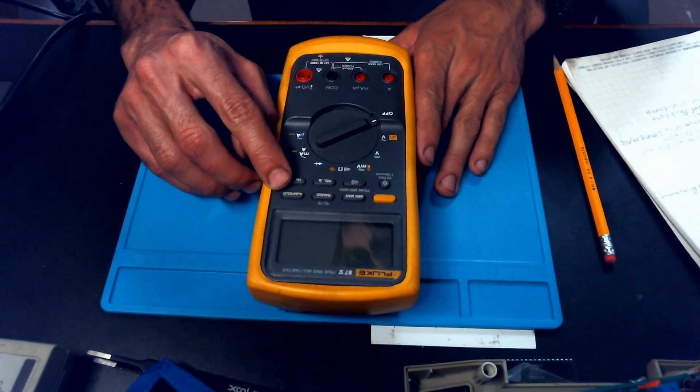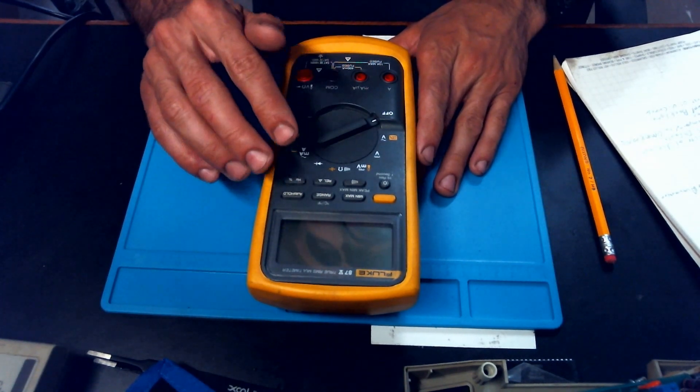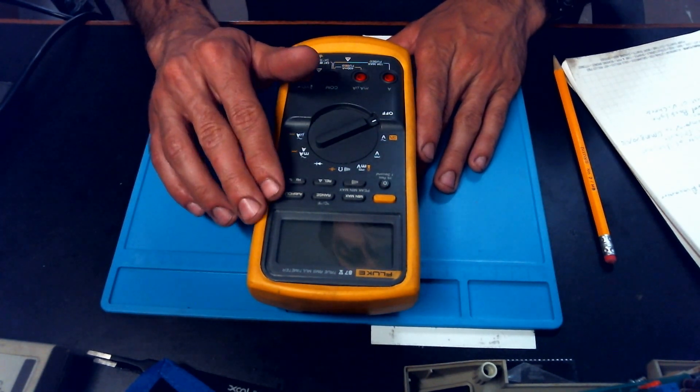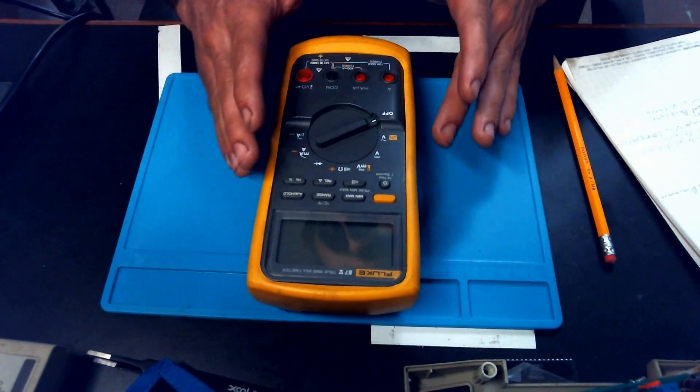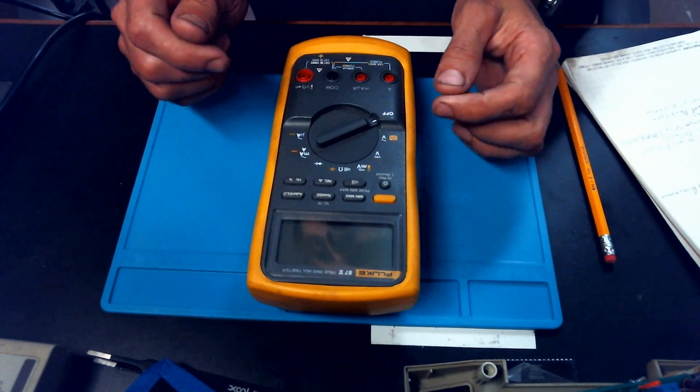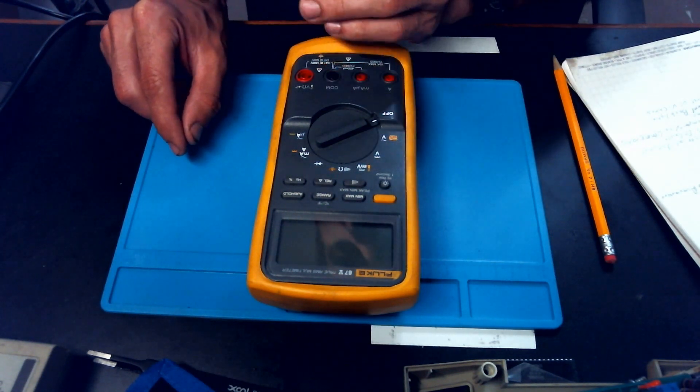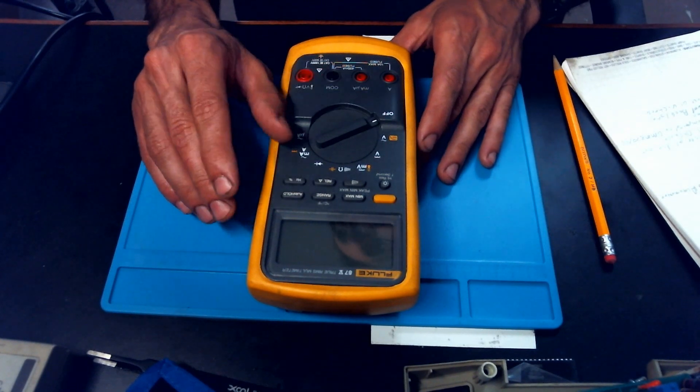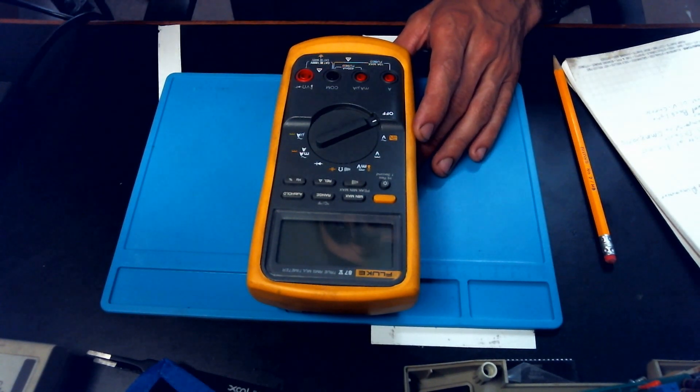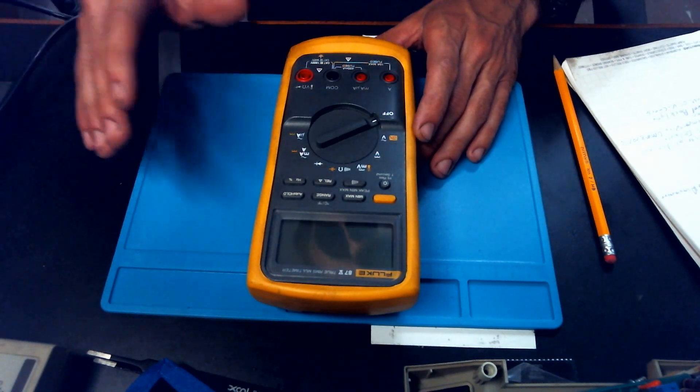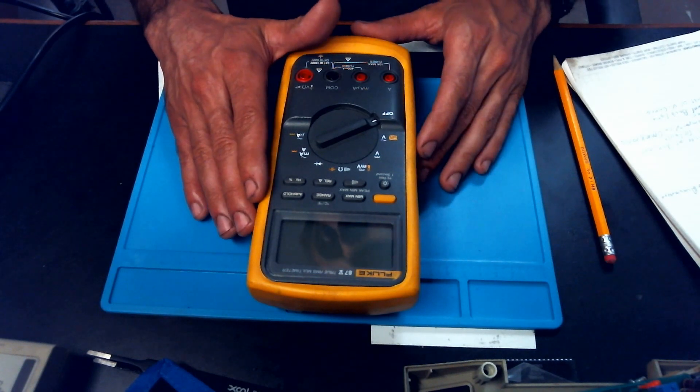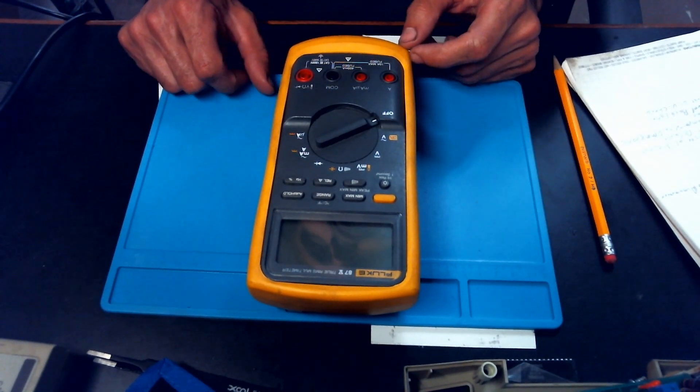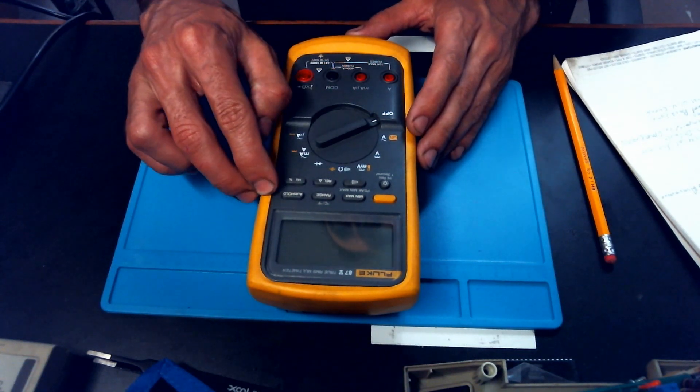A few of the other features are the auto hold, which a lot of meters will have a hold function. But it is not a auto hold. I believe some of them may call it a touch hold, where if you're taking a measurement and you've got both probes in your hand and you're trying to hold on to this little measurement, you have to hit the hold button to actually just freeze that measurement. What auto hold does is it senses whenever you're taking a measurement and that measurement stabilizes, it will automatically freeze the measurement, which compared to your normal hold, which is basically going to be useless because if you've got your hands full, how are you going to freeze that measurement? It's a really, really handy feature to have.